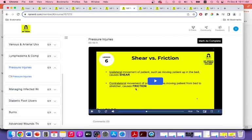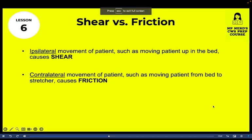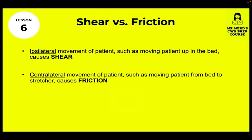Lesson 6 covers pressure injuries. Shear and friction are not the same thing — the CWS exam loves this question. If you move a patient ipsilaterally — for example, boosting them up in the bed — that's how shear can happen. If you move a patient contralaterally — from one place to another, like from bed to stretcher — and an open wound happens, that's because of friction. That's the difference between shear and friction.